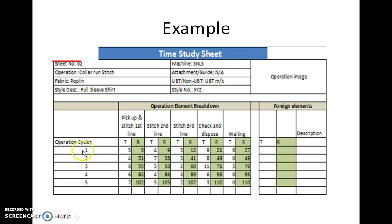In the first operation cycle, it starts with 5; the 2nd element time ends with 9; the 3rd one ends at 12; and the 4th element ends with 21. Some waiting time was noticed and is recorded till 27. So each cycle is divided into 4 elements, and this timing is repeated 5 times to get an average timing.